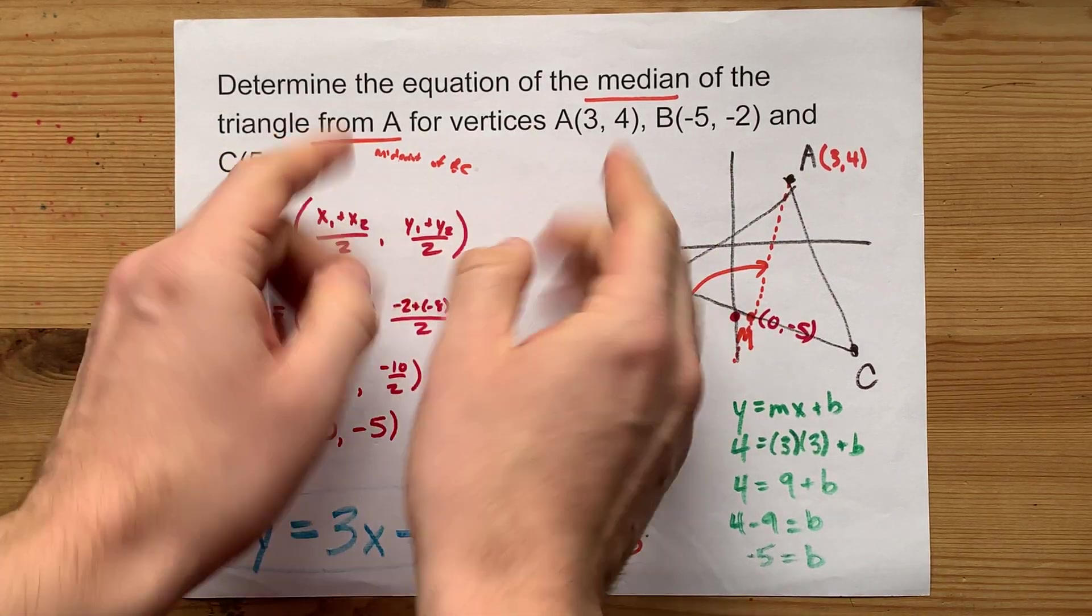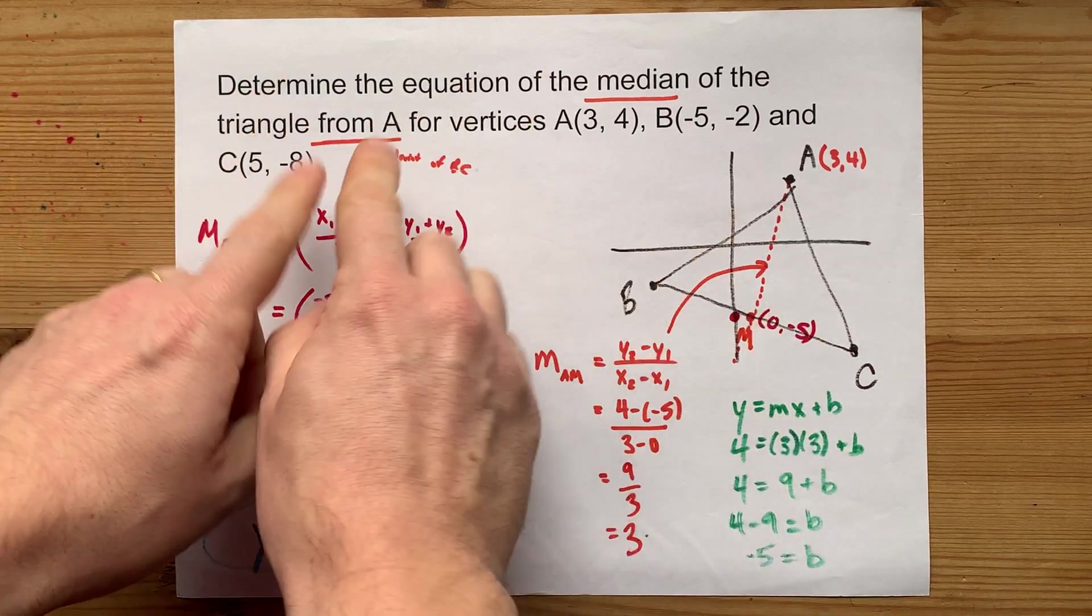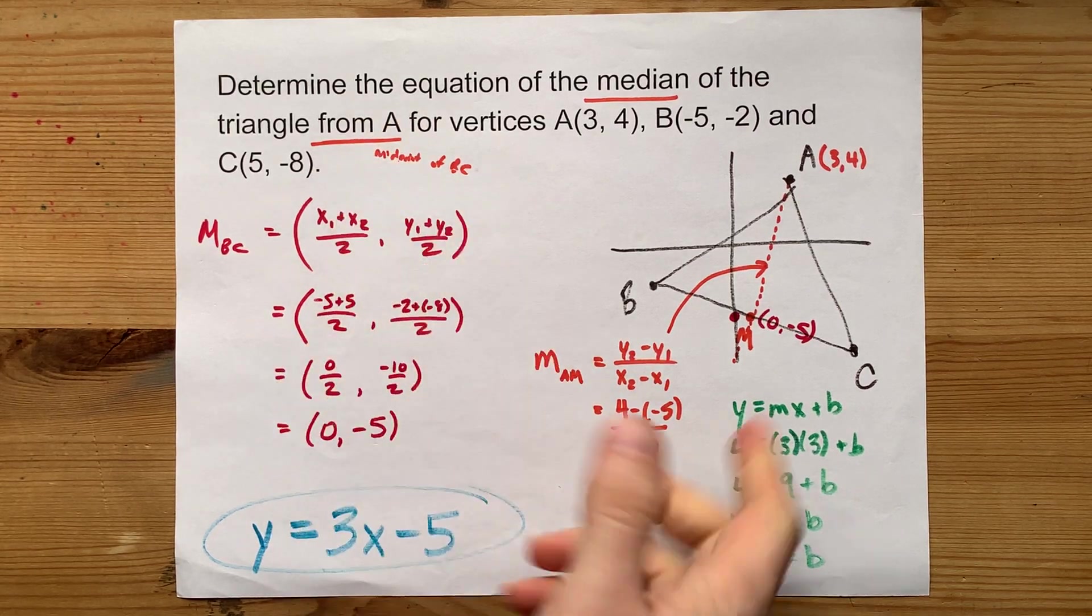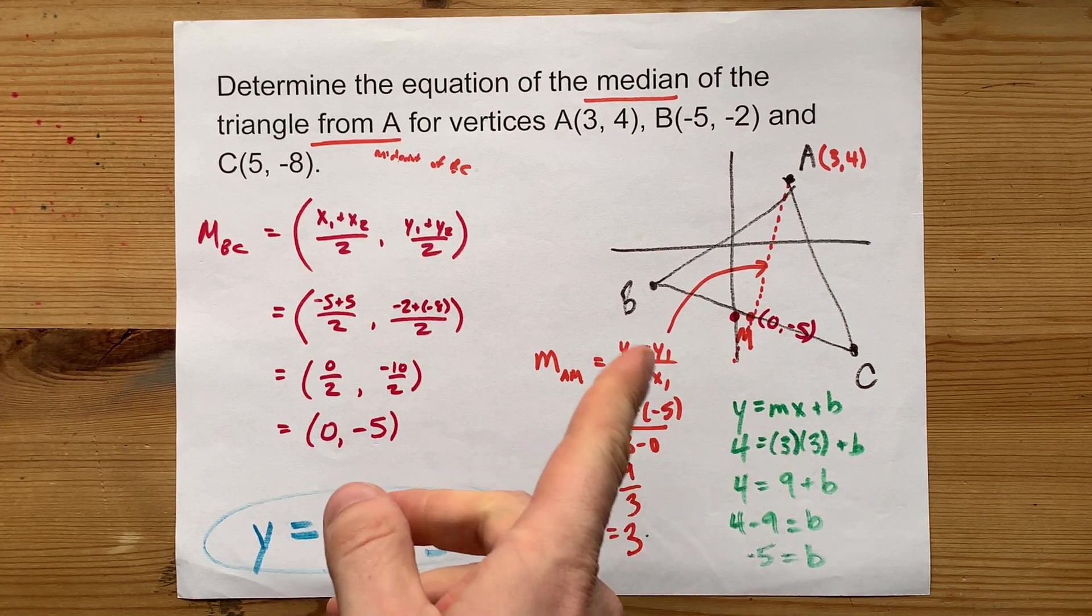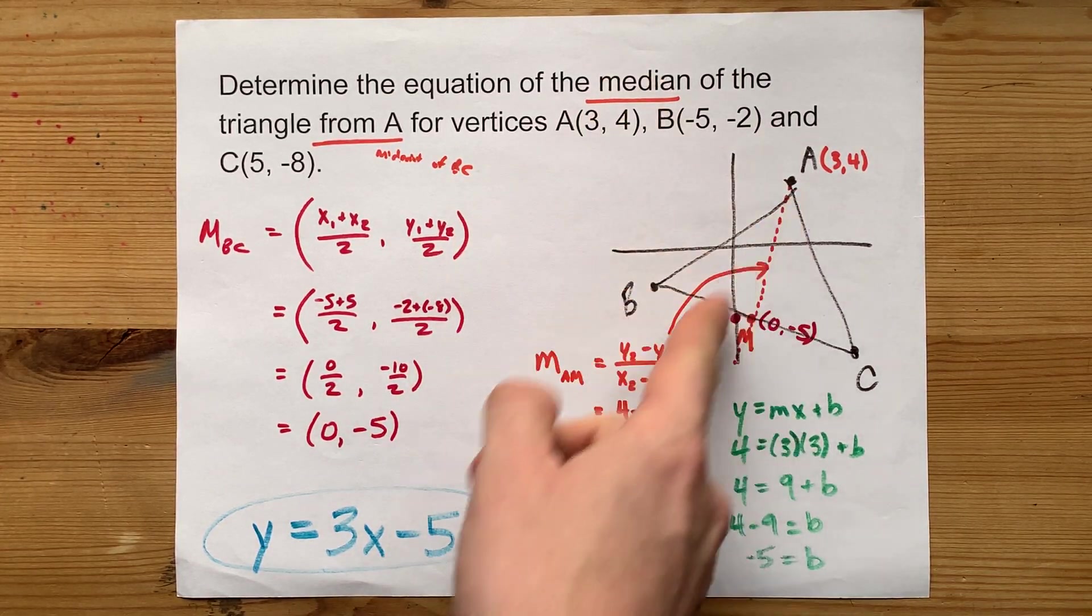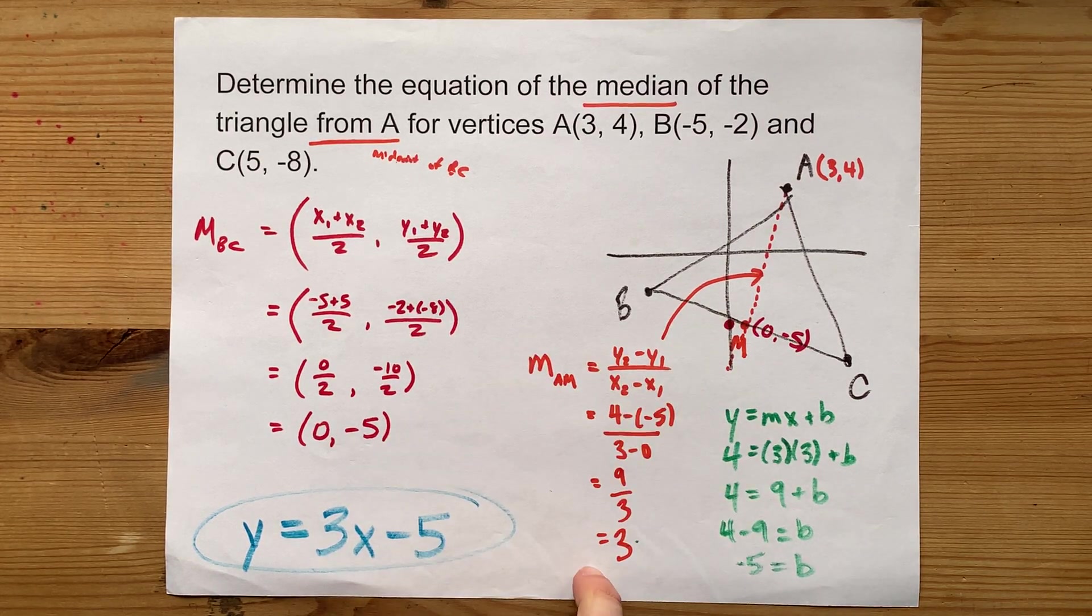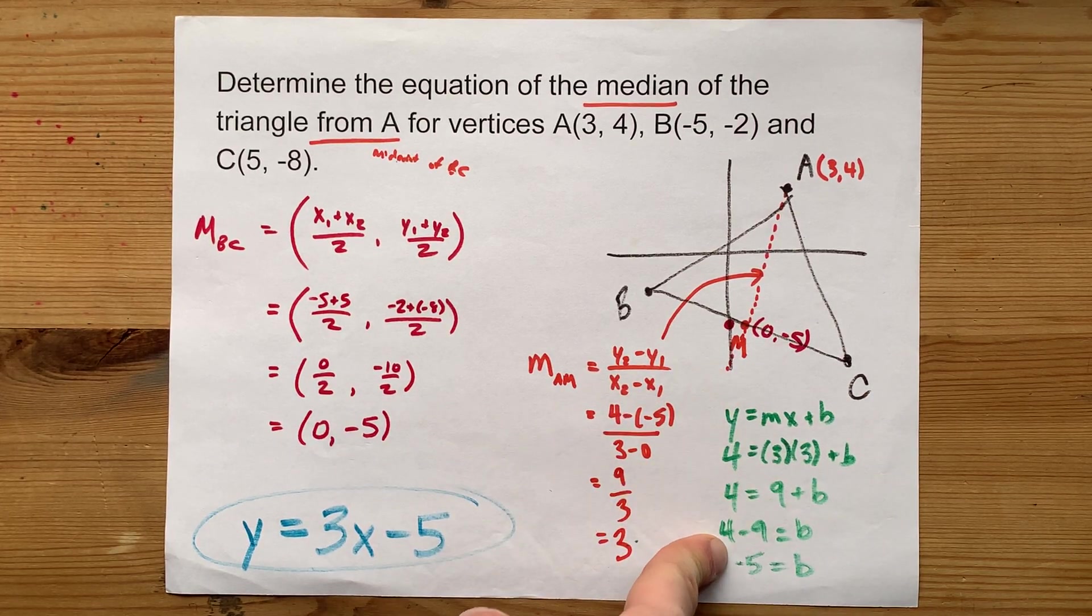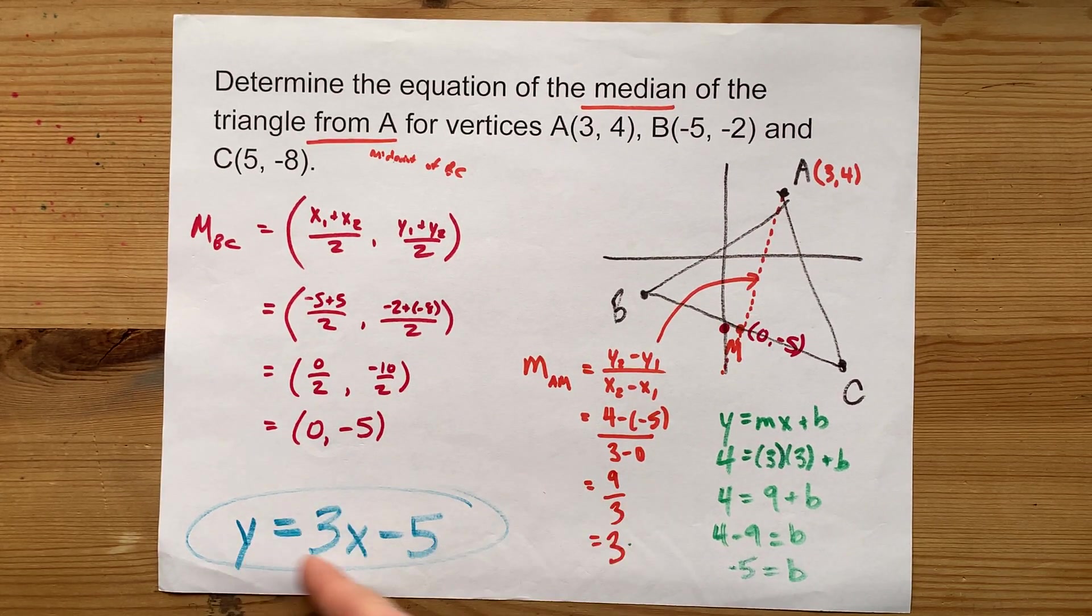The steps to find the equation of a median are: find the midpoint of the opposite side compared to the corner you're taking the median from. That is, if we were asked for A, we got the midpoint between B and C, the other two corners of the triangle. Then, using that midpoint and the actual corner that the median is coming from, do a slope formula. Then plug that slope and either point into y equals mx plus b to solve for b. Because then you'll have m and b, and you can put those into the equation of a line, y equals mx plus b.